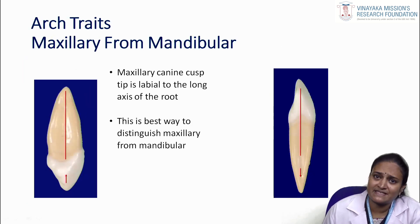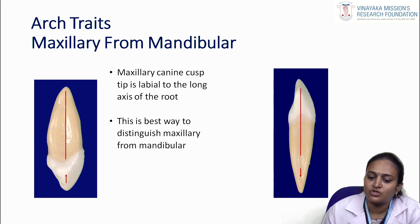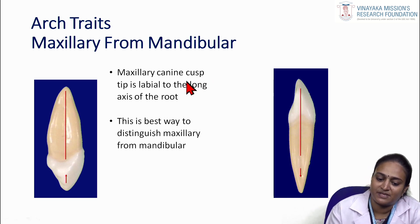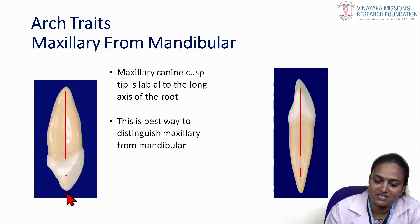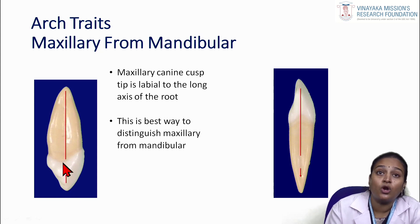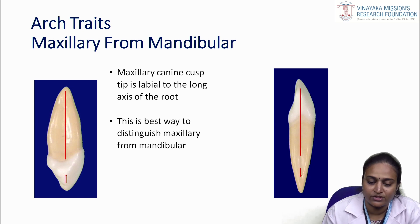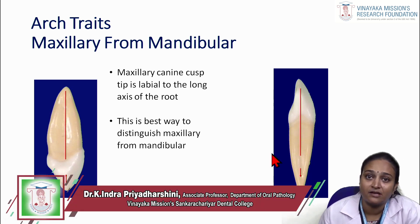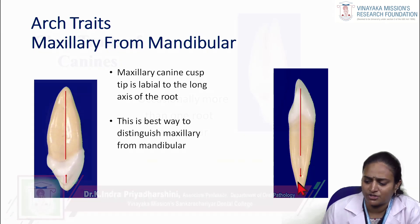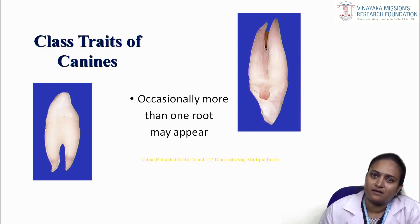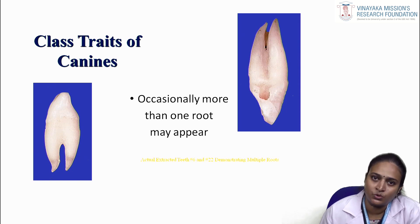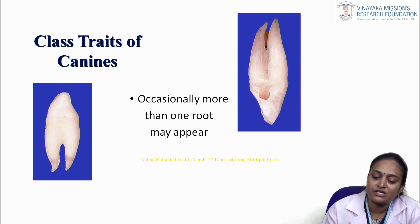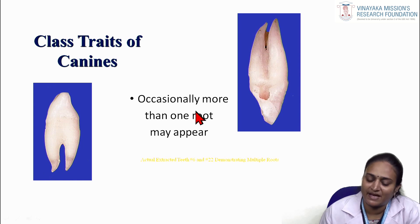The arch triad distinguishing maxillary from mandibular canine: the maxillary canine cusp tip is labial to the long axis of the root. This is the best way to distinguish between the maxillary and mandibular canine tooth. Canine roots are generally a single long root, but occasionally more than one root may appear.